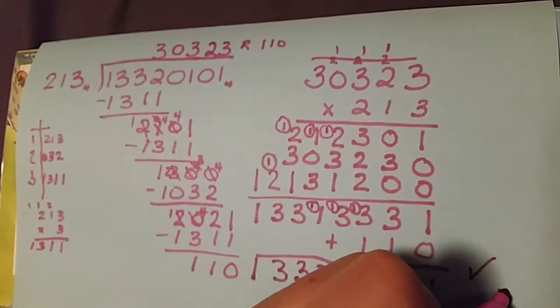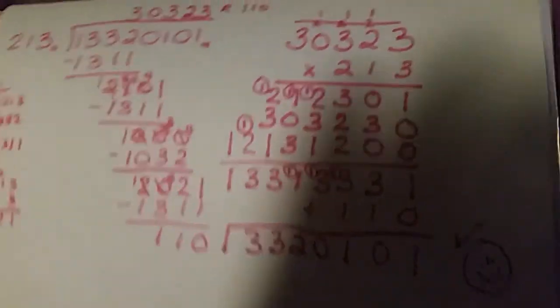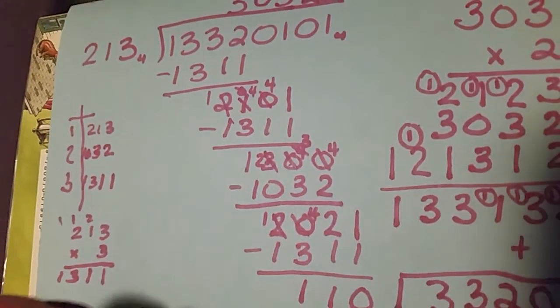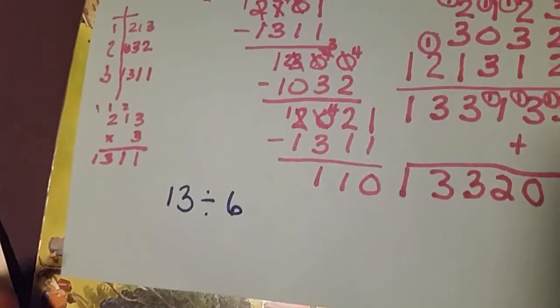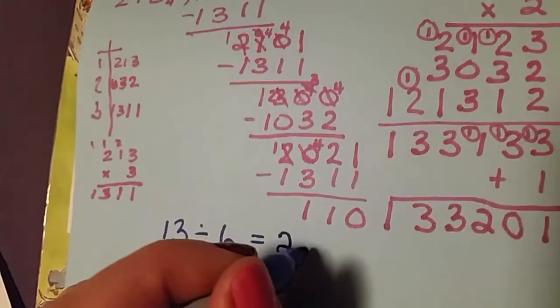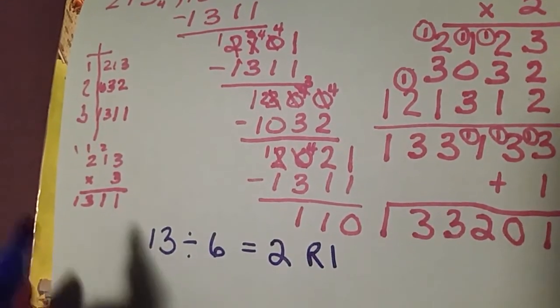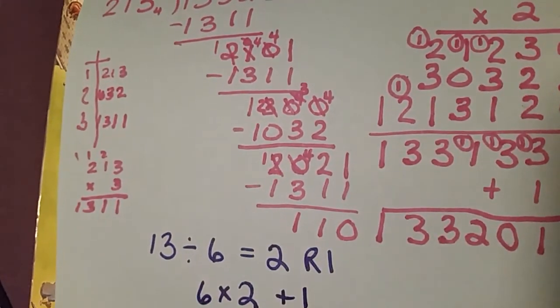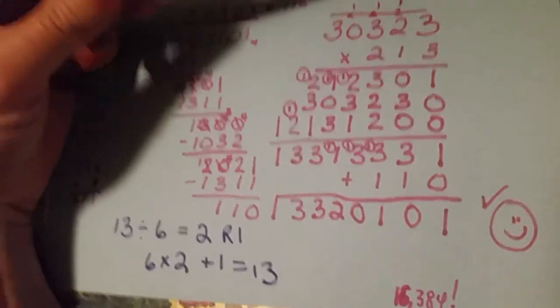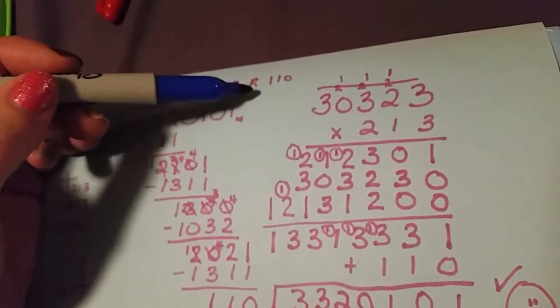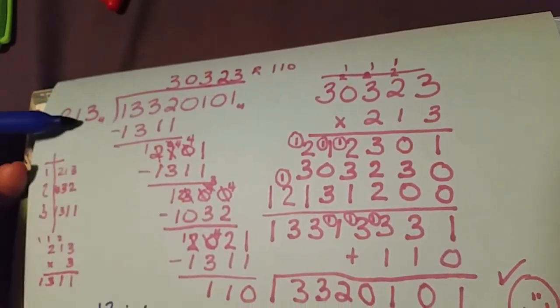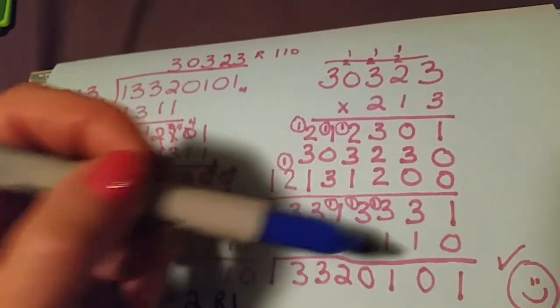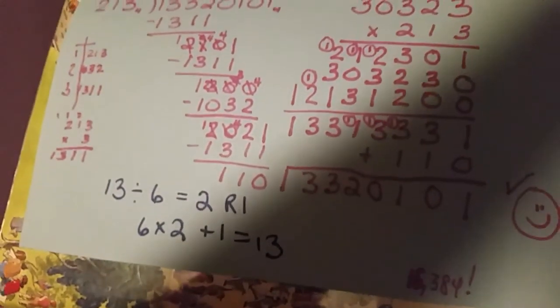If you're confused about the remainder, think of a simpler base-10 problem. Say we're dividing 13 by 6. I know that equals 2 with a remainder of 1. To build back up to 13, I take 6 times 2 — that's how many groups of six fit — and add the remainder 1 back on the end. That's exactly what we're doing here: do the division, get an answer and a remainder, then take the answer times the divisor and add back the remainder. That's how we return to the original number. Happy dividing!